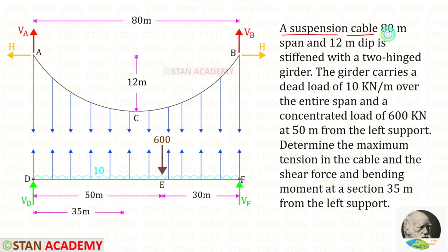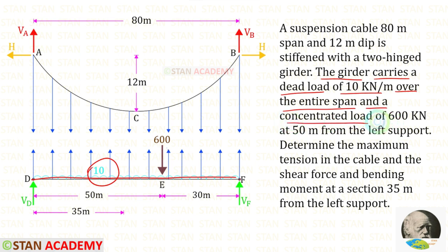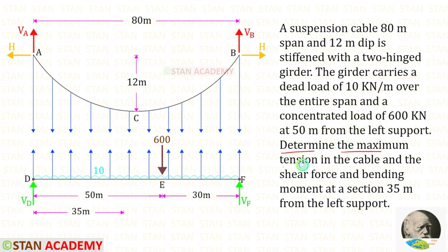A suspension cable with 80 meter span and 12 meter deep is defined with a two-hinged girder. The girder carries a dead load of 10 kN per meter over the entire span and a concentrated load of 600 kN at 50 meter from the left support. Determine the maximum tension in the cable and the shear force and bending moment at a section 35 meter from the left support.